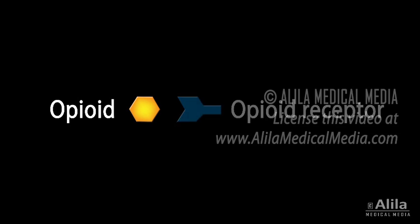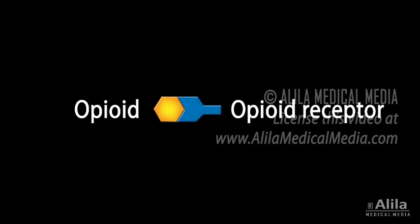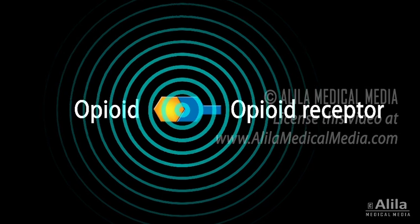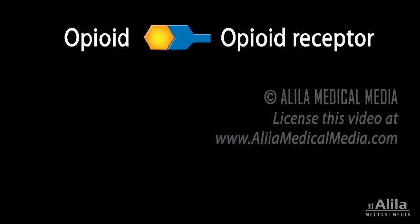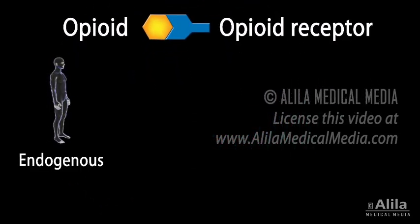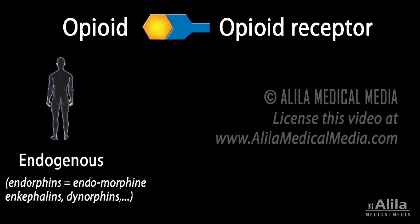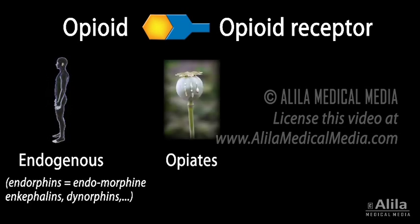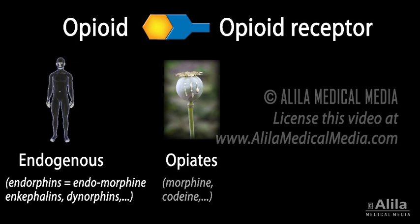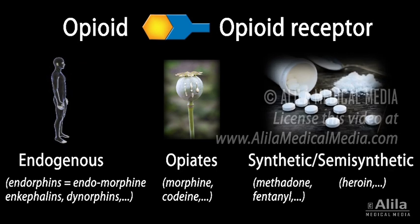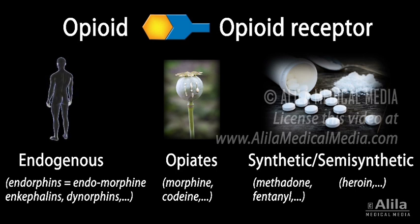Opioids refer to a class of drugs that act via opioid receptors in the nervous system to relieve pain. The term opioid includes endogenous opioids occurring naturally in the human body, such as endorphins, opiates found in the opium poppy plant, such as morphine, and synthetic and semi-synthetic opioids.